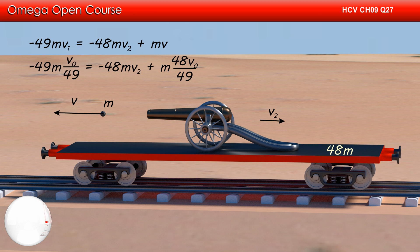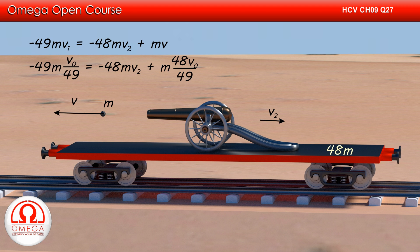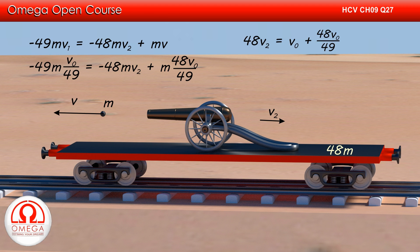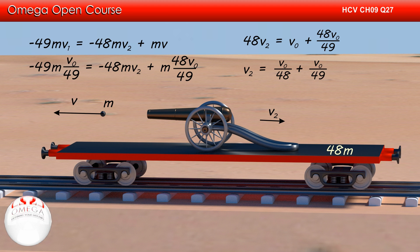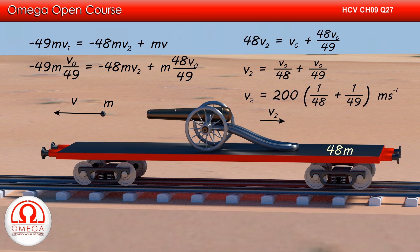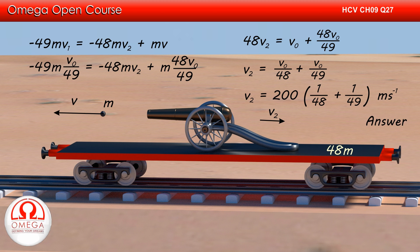Putting the values of V and V1, we get: -49m(V0/49) = -48mV2 + m(48V0/49). Dividing both sides by m and simplifying, we get 48V2 = V0 + 48V0/49, or V2 = V0/48 + V0/49. Putting the value of V0 = 200 m/s, we get V2 = 200(1/48 + 1/49) m per second. This is our answer.